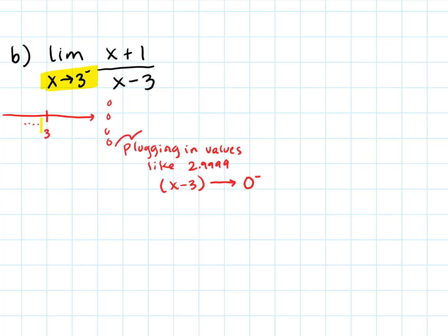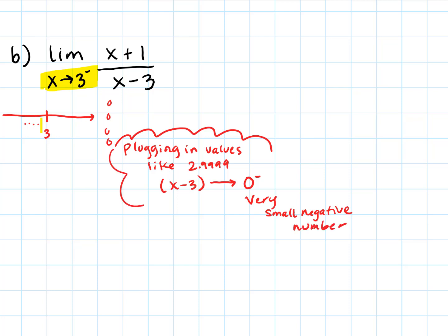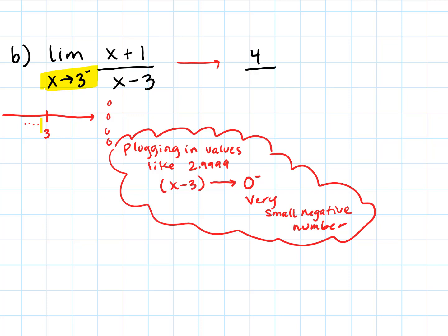We're going to have values that get very, very small, but this time it is a negative number when it gets small. The numerator still approaches 4, because plugging in numbers very close to 3 and adding 1 gives something very close to 4. The denominator approaches 0, but we have to know the direction — it's approaching 0 from the left, a very small negative number. When I take 4, a positive quantity, and divide by something very small yet negative, I get a quantity decreasing without bound. We capture that by saying that limit is negative infinity.